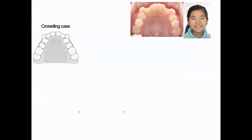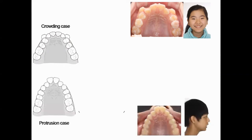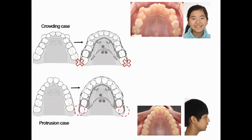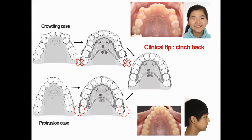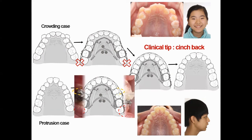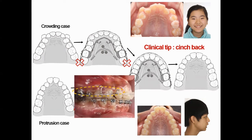Here is another clinical tip. In crowding cases, do not apply cinchback — it allows you to achieve efficient leveling and alignment. However, cinchback is necessary for total arch distalization. In protrusion cases, a closed coil chain or ligature wire is also available to avoid space opening.